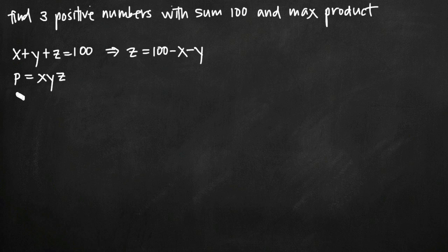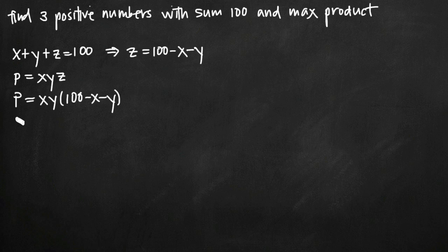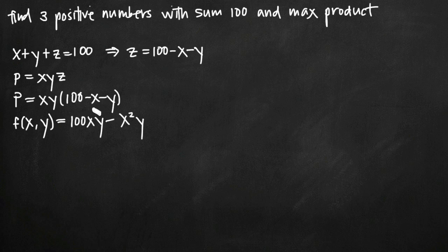Now we have a value for z that we can plug into our product formula. So we'll say product equals x times y times (100 minus x minus y). Notice that our product equation is now in terms of two variables only, x and y. Let's call this a function f(x, y) and distribute the xy across the 100 minus x minus y. When we do that, we get 100xy minus x squared y minus xy squared.